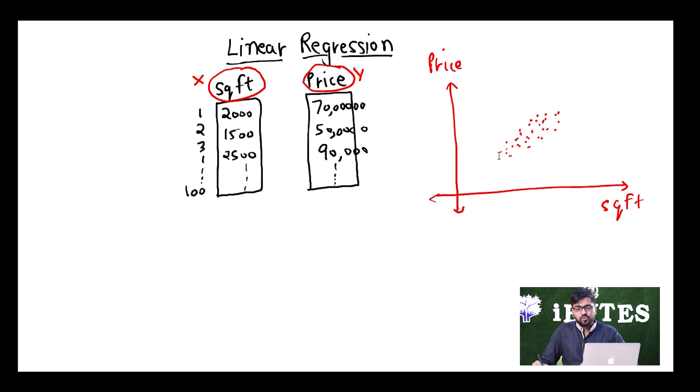Now what linear regression is going to try and do is it is going to try and build a linear relationship between my dependent and independent variable. The dependent variable is y, that is price. So it is going to try and build a linear relationship.